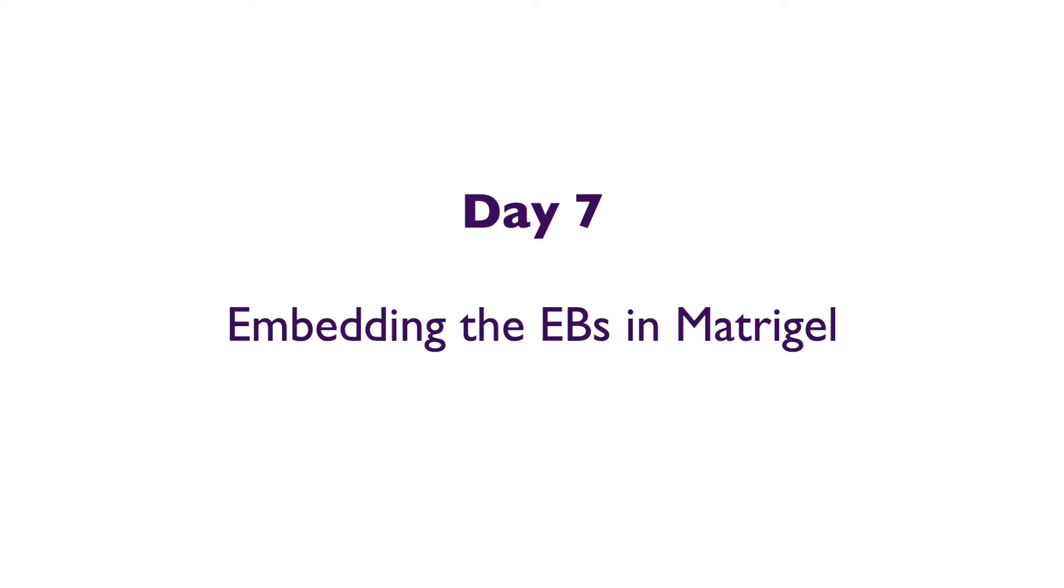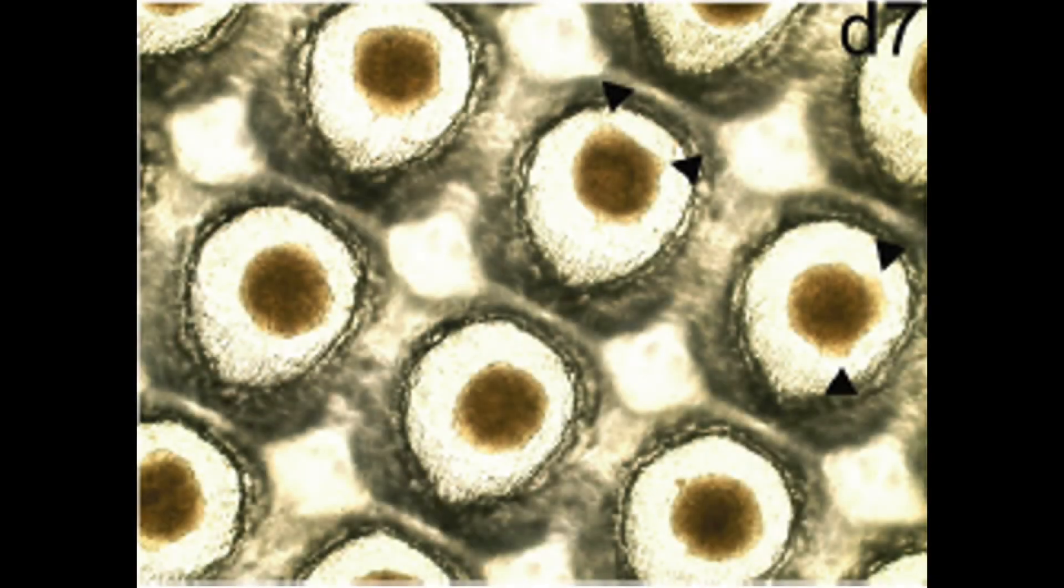When looking at the EBs under the microscope on day 7, you will most likely notice the appearance of neuroectodermal buds, as indicated by the black arrowheads. These buds become more pronounced after 24 hours in Matrigel embedding.